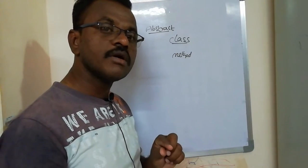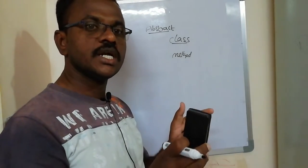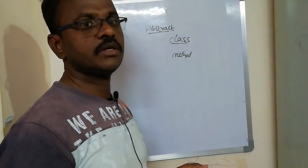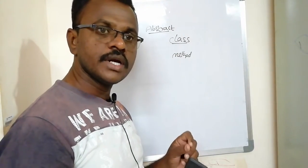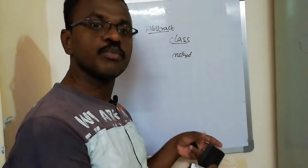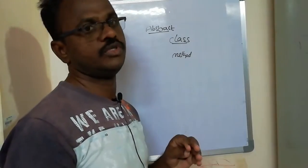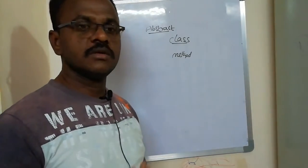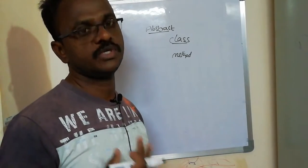Abstract methods cannot contain any body section. Abstract methods can contain only the prototype, like the method name. That is the reason an abstract class cannot create an object. We can declare a class as abstract by writing the keyword 'abstract' before the class — that type of class is called an abstract class.